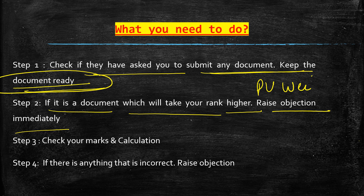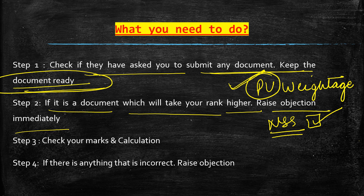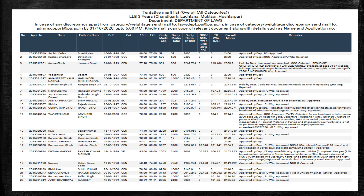I'll tell you where to send the email. Step 3: Check your marks and calculations — I'll explain how to check calculations in the video. Step 4: If anything is incorrect, raise an objection. If the problem is related to general details or information you provided to the university, send the email to the Law Department. If it is related to category or weightage, send to the admissions support email.